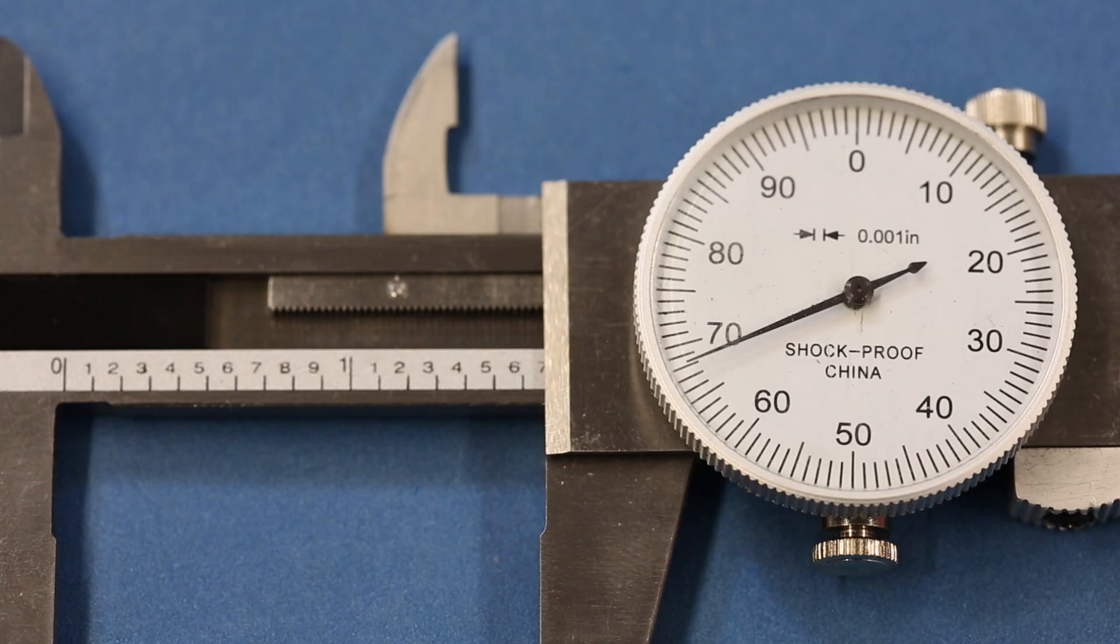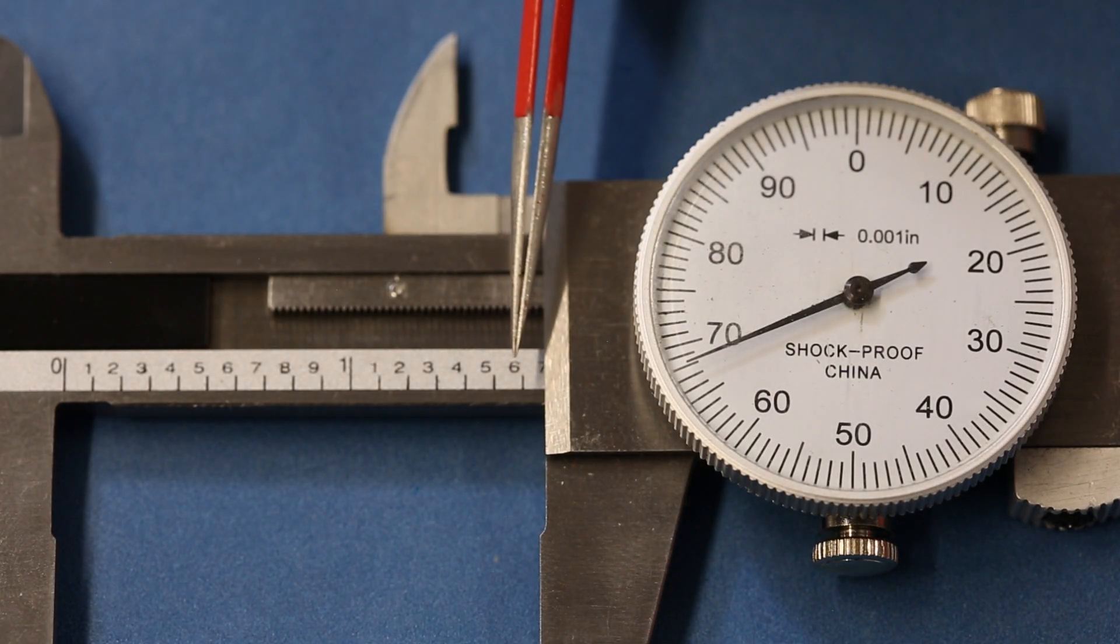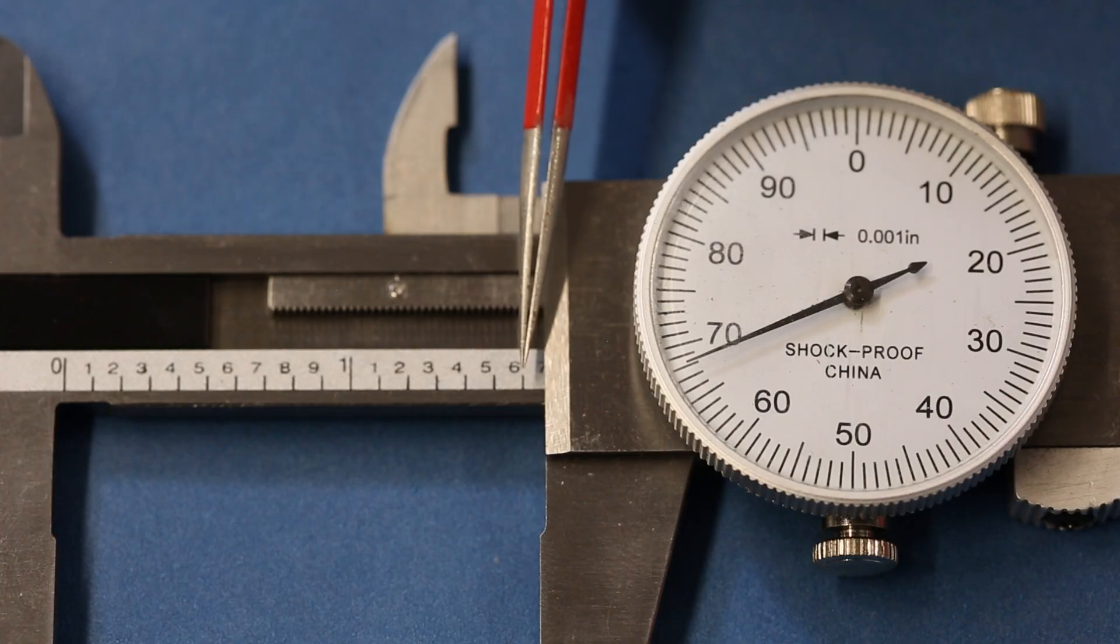Dial calipers require a bit more effort to read, and they usually only come in either imperial or metric. To read them, find the largest measurement on the main scale visible to the left of the slider. In this case, it's 1.6 inches.